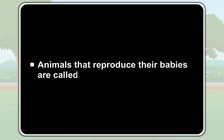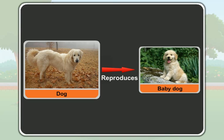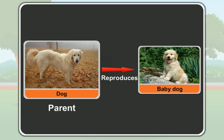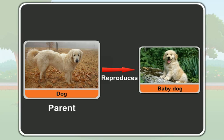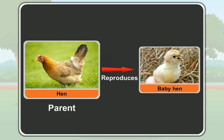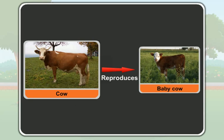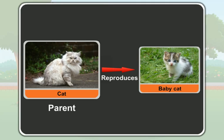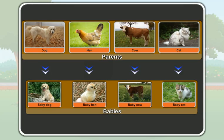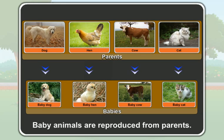Animals that reproduce their babies are called parents. So, a dog is the parent of a baby dog. A hen is the parent of a baby hen. A cow is the parent of a baby cow. And a cat is the parent of a baby cat. So, baby animals are reproduced from parents.